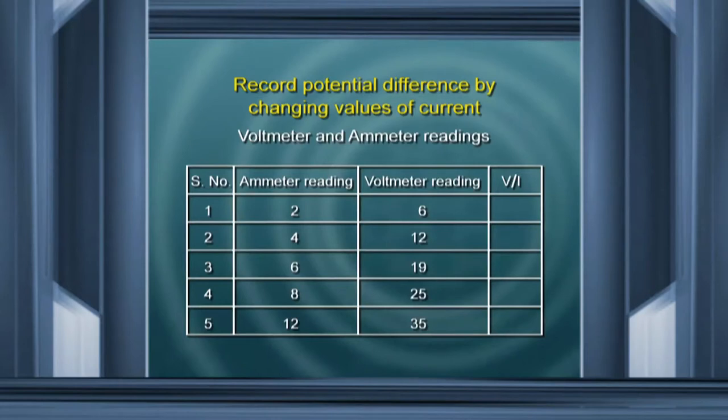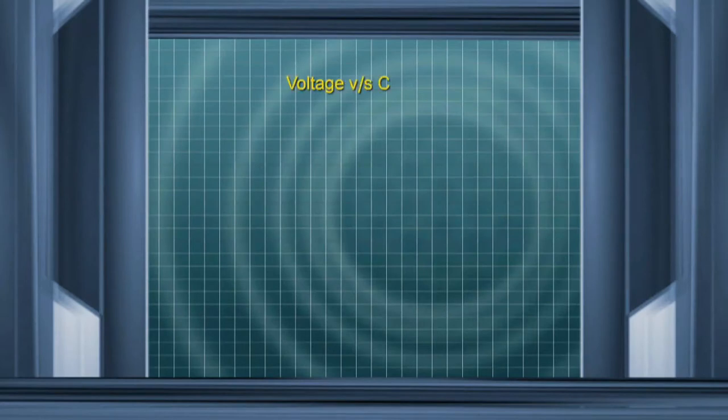Let us go along to analyze this by using the graph. We take a centimeter graph paper. The graph that we draw in physics is to relate two physical quantities which depend on each other, and the mathematics that you do for graphs can be used. First and foremost, we should write what graph we are going to plot — it is a graph of voltage versus current.